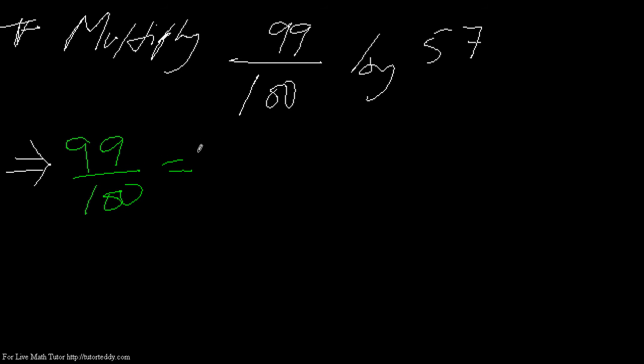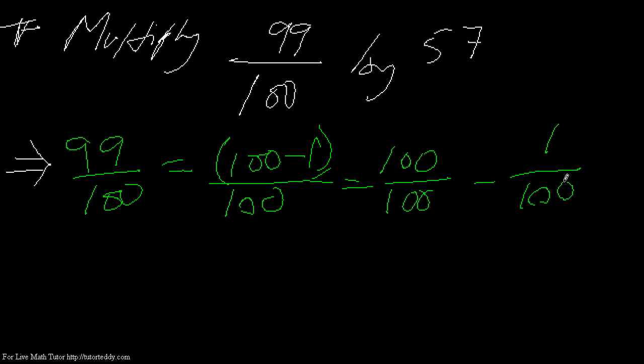Now see, what is 99? 99 is 100 minus 1, right? Divided by 100, if I break it down, I have 100/100 at first, and then minus 1/100. So it becomes 1 minus 1/100.